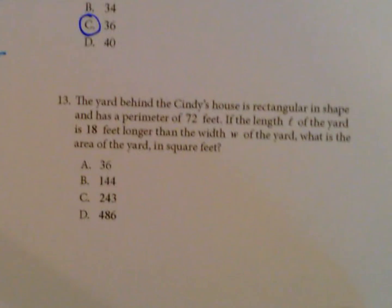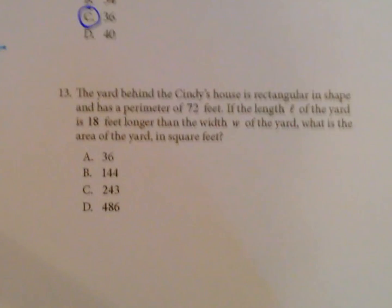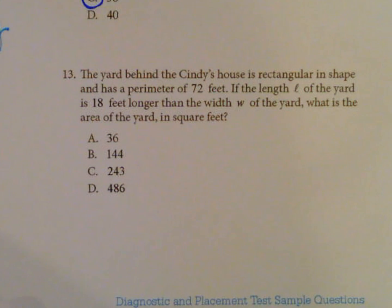Number 13: The yard behind Cindy's house is rectangular in shape and has a perimeter of 72 feet. If the length l of the yard is 18 feet longer than the width w, what is the area of the yard?